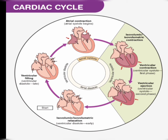The isovolumetric contraction is a short-lasting portion of the cardiac cycle that takes place while all heart valves are closed. The next is ventricular contraction or ventricular systole first phase. Since blood is not being ejected from the ventricles at this early stage, the volume of blood within the chamber remains constant. Consequently, the initial phase of ventricular systole is known as isovolumic contraction.